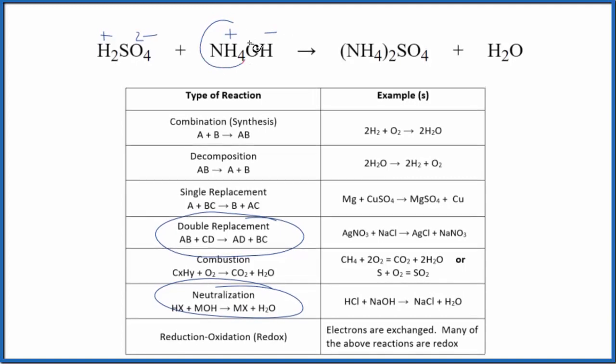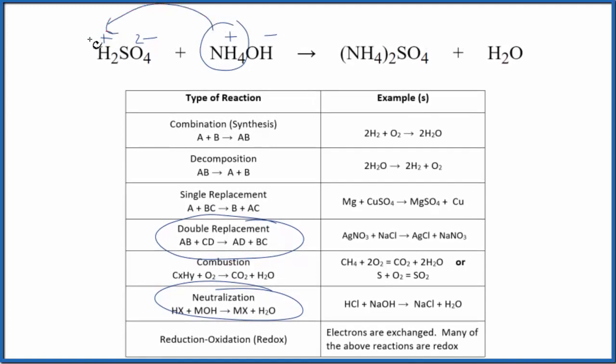So the ammonium ion here and the hydrogen ion they switch places and we end up with, instead of being with the sulfate, the hydrogen is with the hydroxide HOH. That's just water. The ammonium instead of being with the hydroxide it's now with the sulfate. That's NH4 2SO4, ammonium sulfate.